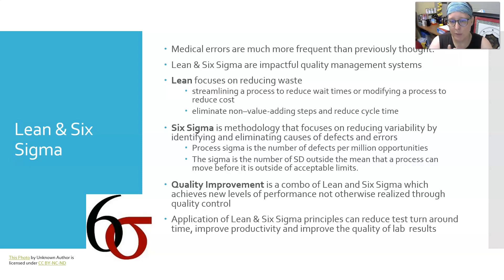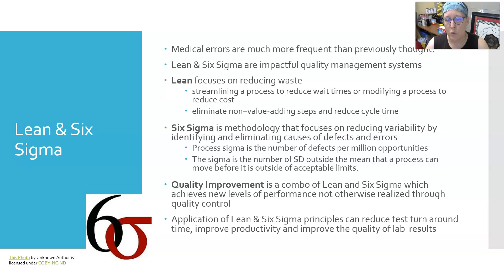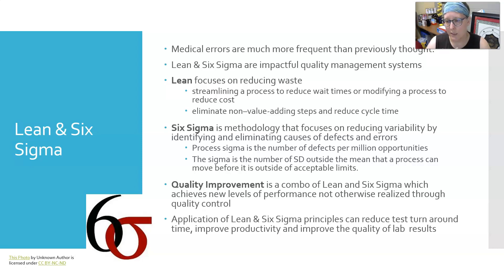Quality improvement is a combination of Lean and Six Sigma, which achieves new levels of performance not otherwise realized through quality control alone. The application of Lean and Six Sigma principles can reduce the test turnaround time, improve the productivity of the lab staff, and improve the quality of lab results.